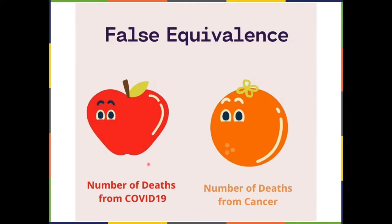Some argue: millions die of cancer, so why make such a fuss about COVID-19? This is a false equivalence — comparing apples and oranges. Many people do die of cancer every year, but cancer is not contagious. You do not get cancer by being in the same room as someone who has it. COVID-19 is both contagious and deadly. That's the critical difference — not that cancer deaths are unimportant, just that they're not comparable.